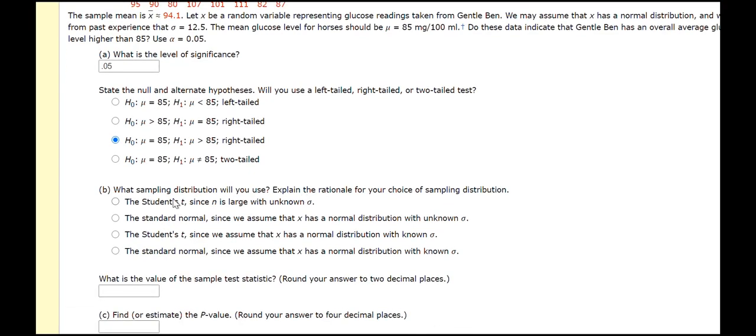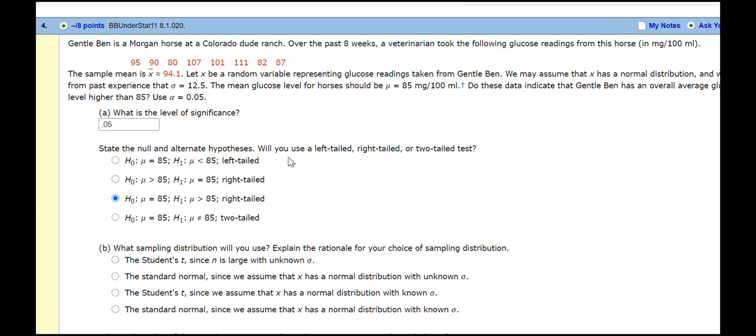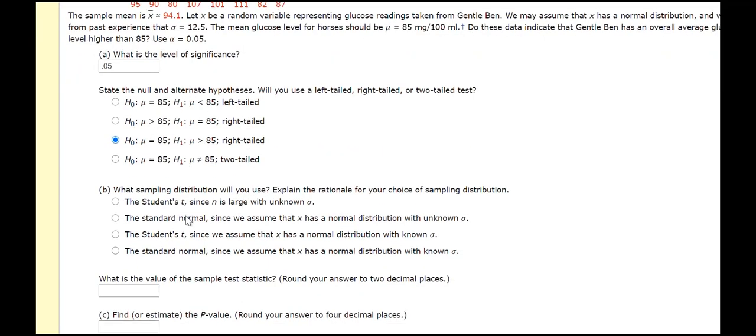What sampling distribution will we use? Well, we were told that X has a normal distribution, and we are also told that we have a standard deviation from this horse from past experience of 12.5. So, we're going to use the standard normal, since we assume it has a normal distribution, but it says unknown, so that's not the right one. Standard normal, since we assume that the X has a normal distribution with the known standard deviation, so this is the one.